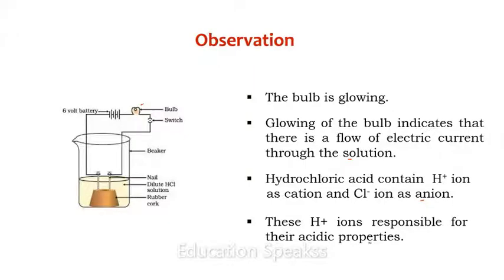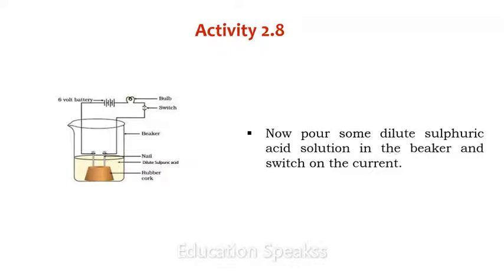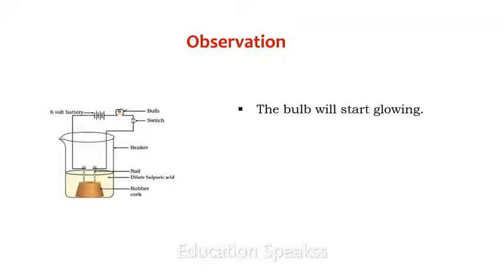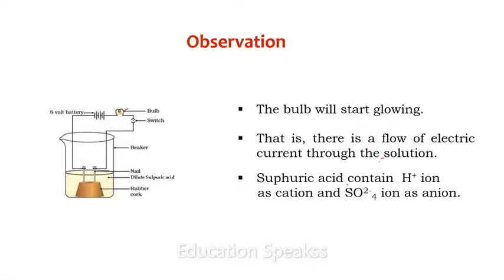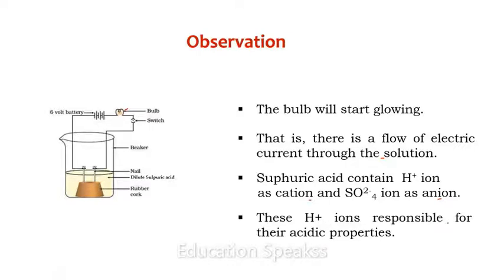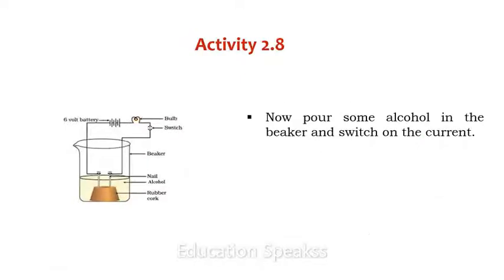Now pour some dilute sulfuric acid solution in the beaker and switch on the current. In this case also the bulb will start glowing, indicating a flow of electric current through the solution. Sulfuric acid contains hydrogen ion as the cation and sulfate ion as the anion. This suggests that sulfuric acid produces hydrogen ions, and these hydrogen ions are responsible for its acidic properties.